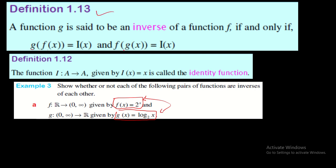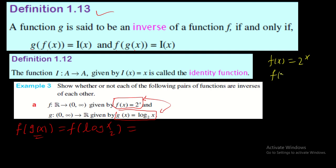First check f(g(x)). We have g(x) = log₂(x). The function f takes any input as the exponent of 2, so f(g(x)) = 2^(log₂(x)). Since the base of the exponent and the base of the logarithm are both 2, we apply the rule: a^(logₐ(x)) = x. Therefore f(g(x)) = x.